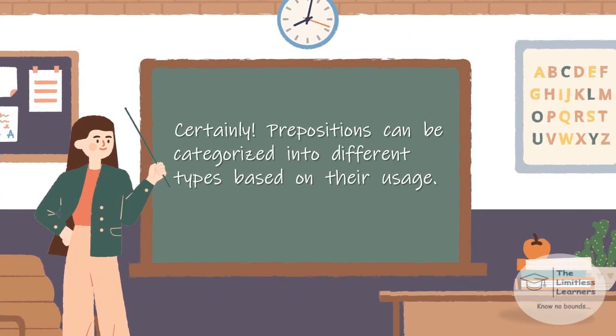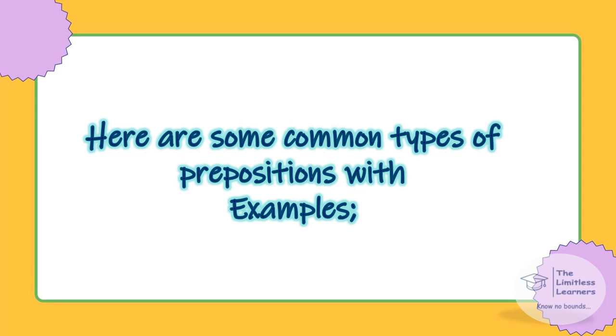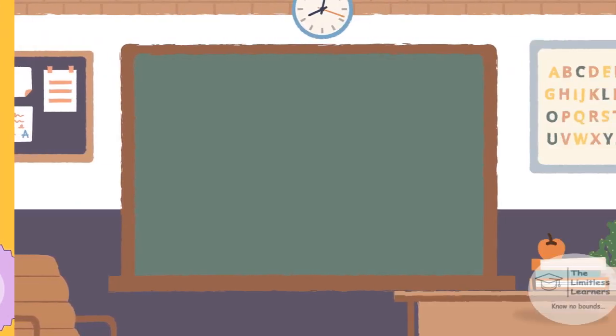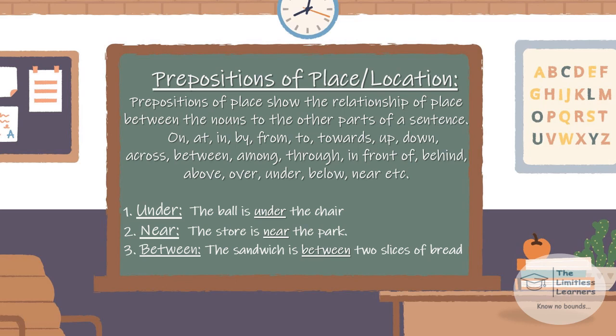Prepositions can be categorized into different types based on their usage. Here are some common types with examples. Prepositions of place or location show the relationship of a place between the noun and the other parts of the sentence. Common ones include: on, at, in, by, from, to, up, down, across, between, among, through, in front of, behind, above, over, below, under, near, etc.